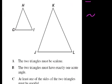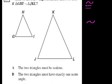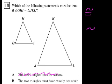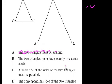Let's see what they give us. The two triangles must be scaling—now you can have similar triangles that are isosceles or equilateral, that's not right. The two triangles must have exactly one acute angle. No, they could have two acute angles. They could have three acute angles. The way that they've drawn here, actually all of them are acute. None of these angles are greater than 90 degrees, so that's not right.